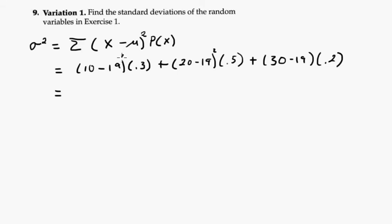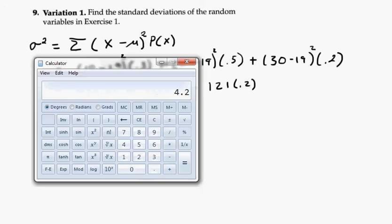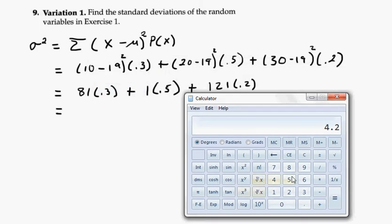So let's see. 10 minus 19, this is going to be negative 9 squared. I believe that 9 squared is 81 times 0.3 plus 1 squared is 1 times 0.5. And then this is going to be 11 squared, which is 121 times 0.2. So back to the calculator. So 81 times 0.3 plus 0.5 plus 121 times 0.2 equals 49.